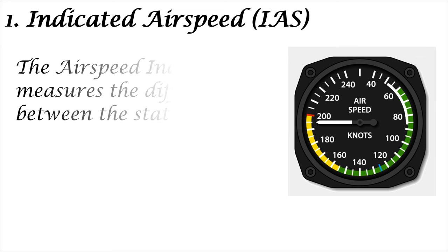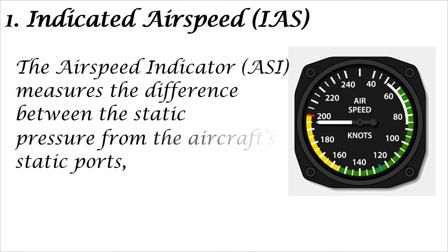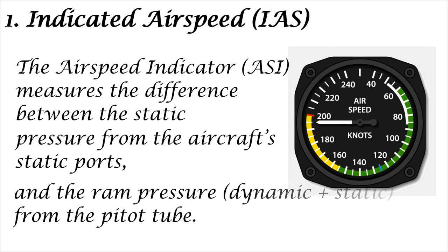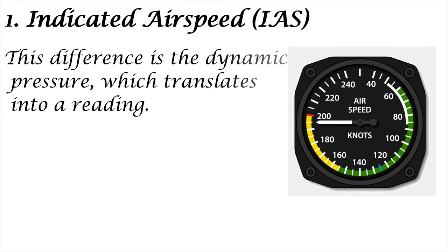The Air Speed Indicator, ASI, measures the difference between the static pressure from the aircraft's static ports and the ram pressure — dynamic plus static — from the pitot tube. This difference is the dynamic pressure, which translates into a reading.